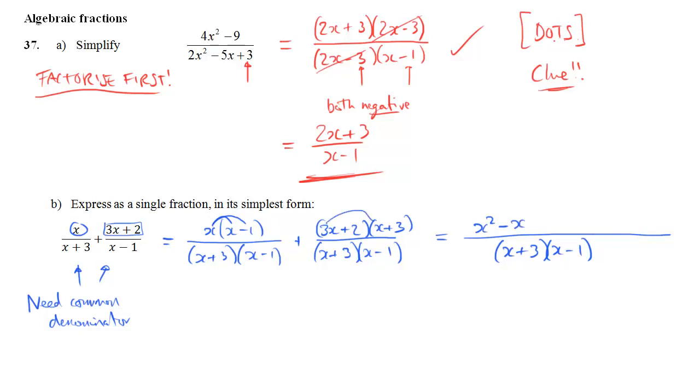Then going on to the second fraction, 3x times x is 3x squared. 3x times the 3 gives me 9x. Then I've got 2 times x gives me 2x. And finally, 2 times 3 gives me the 6. So the next step is obviously to simplify what I've got on the top and tidy that up. I have 4x squared. I've got a 9x, 2x, and a minus x, so that gives me 10x. And then I've got the plus 6.